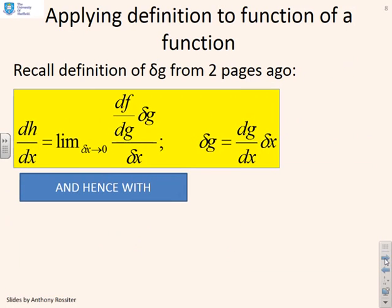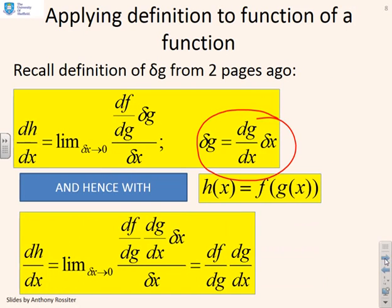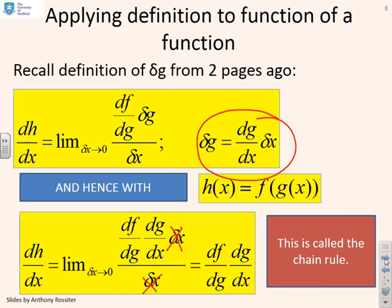Finally, replacing delta g with (dg/dx) times delta x, and since we're talking about limiting values, dh/dx is the limit as delta x goes to zero of (df/dg) times (dg/dx), and the two delta x terms cancel. You end up with the chain rule: dh/dx equals (df/dg) times (dg/dx). So if h is f of g of x, you differentiate f with respect to g, then differentiate g with respect to x.